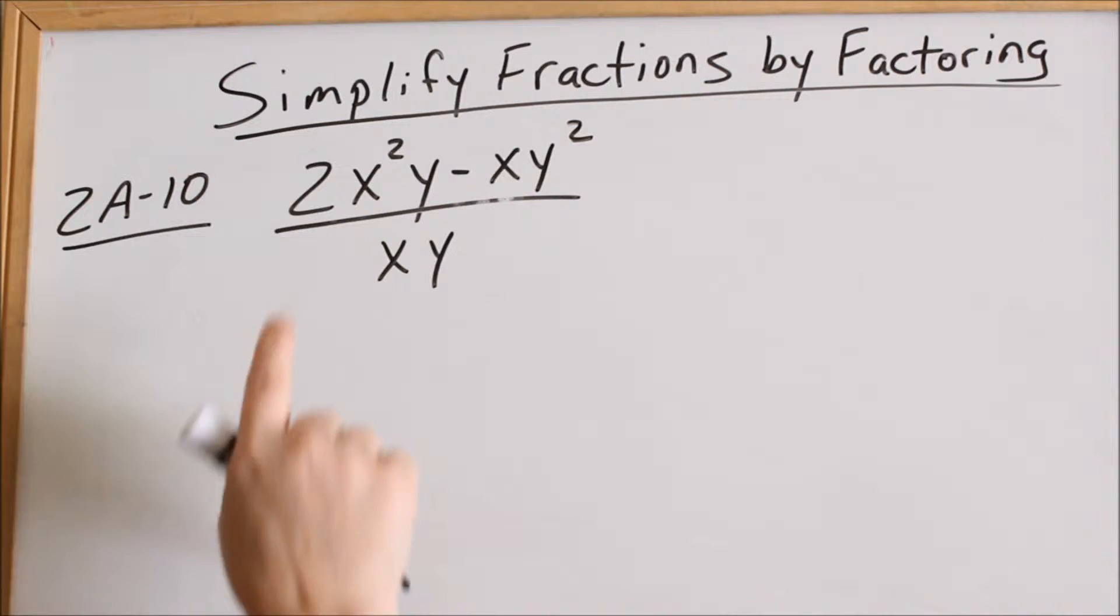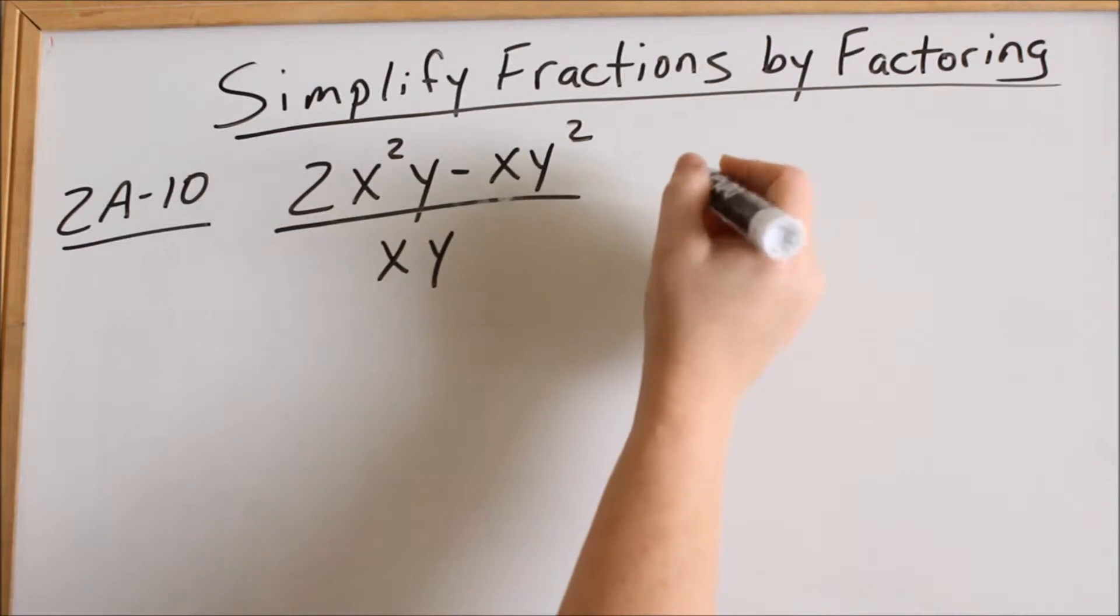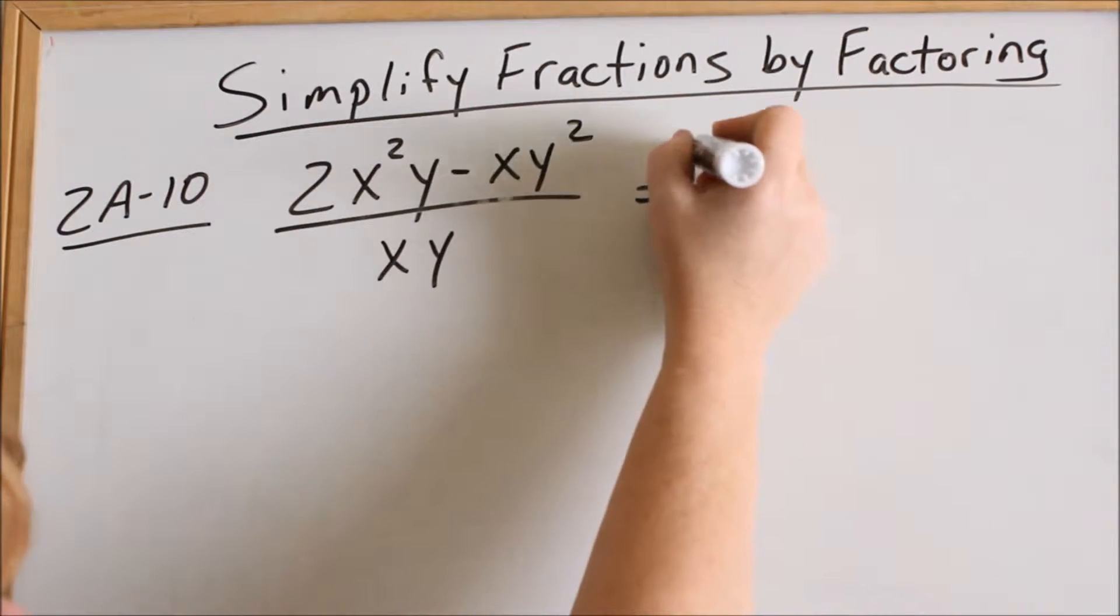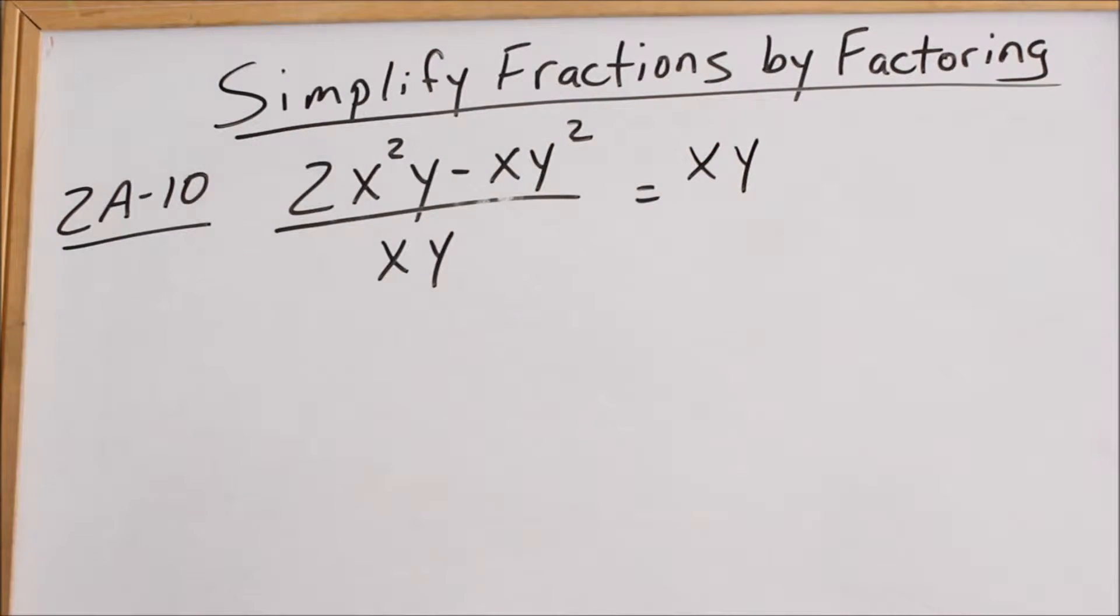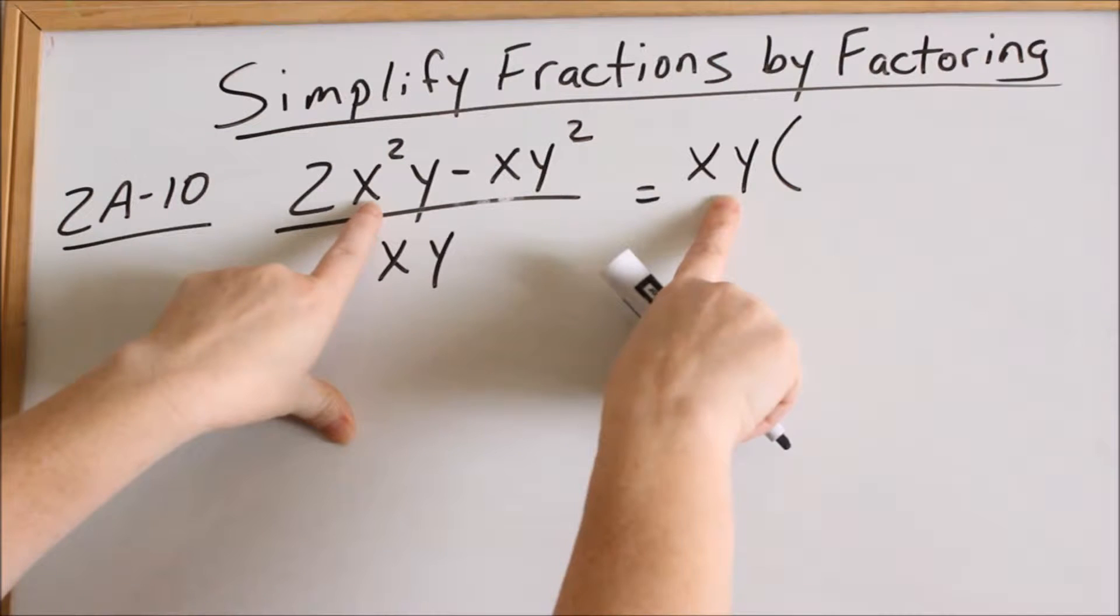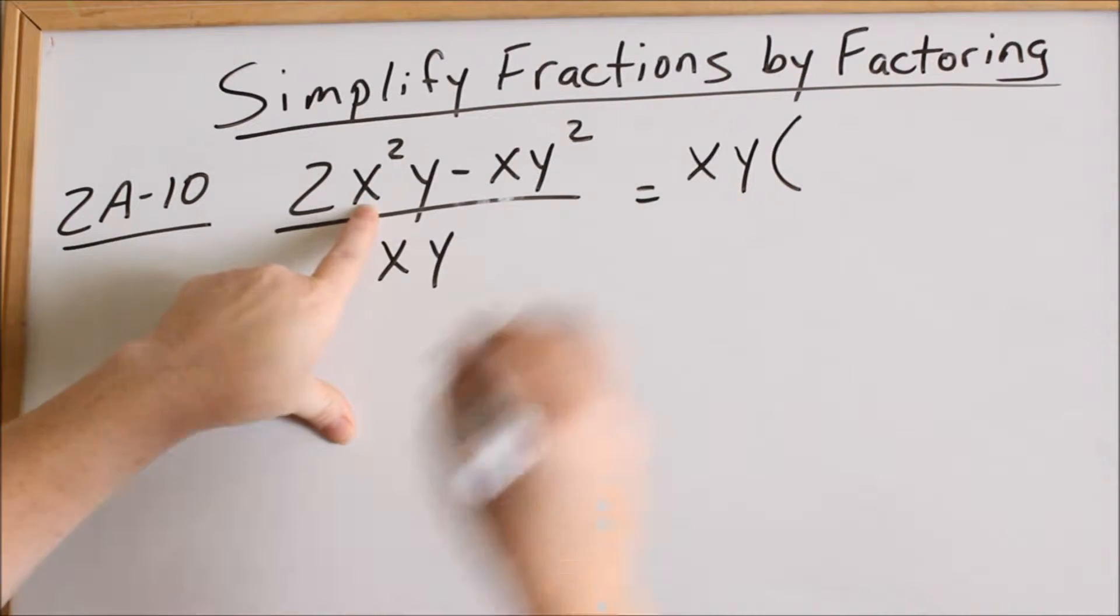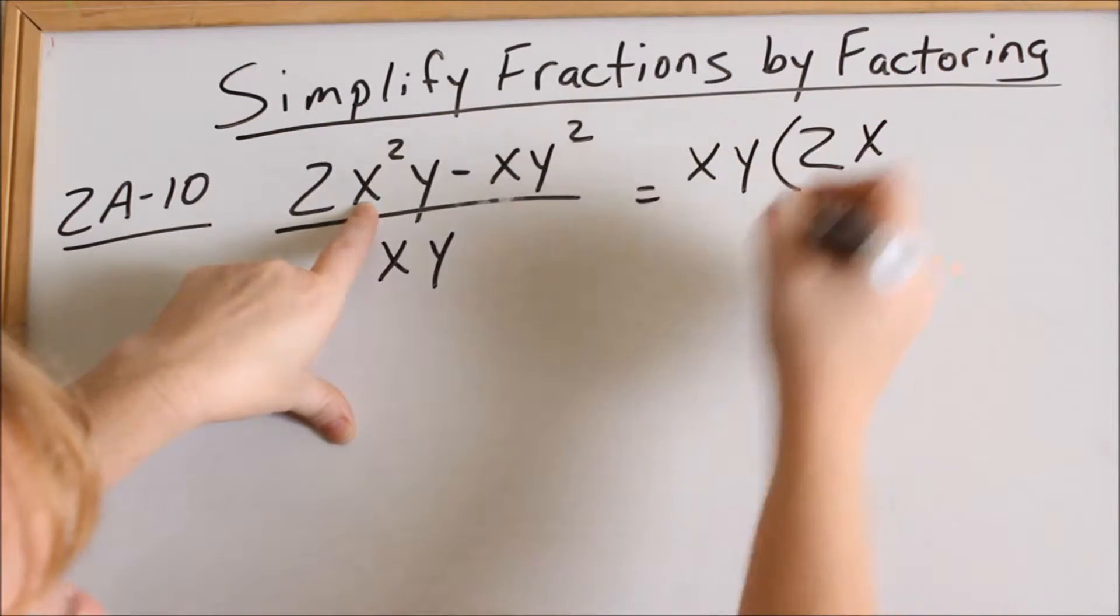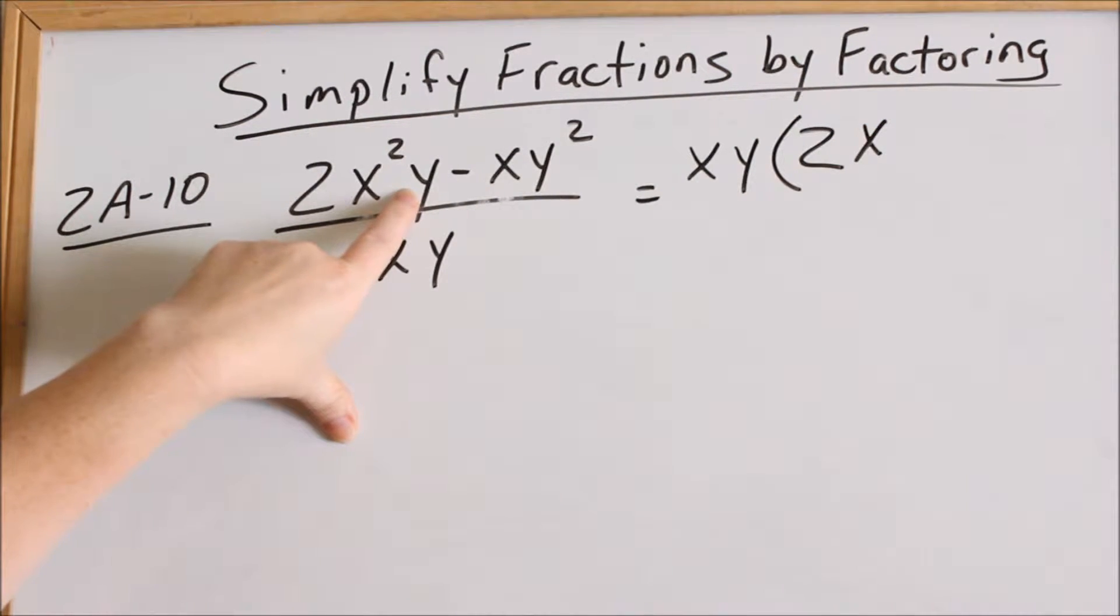So the most that I can pull out of each of these terms in the numerator is an x and a y. So if I factor out an x and a y, then what do I have left? You use your parentheses. I'm dividing out an x and a y from this term. So I still have my 2 left. Then if I pulled out at least 1x, I still have 1x left. And I'm pulling out a y, so I don't have any y's left. Then I have my subtraction sign. If I divided out an x and y, I don't have any x's left, but I would have 1y.